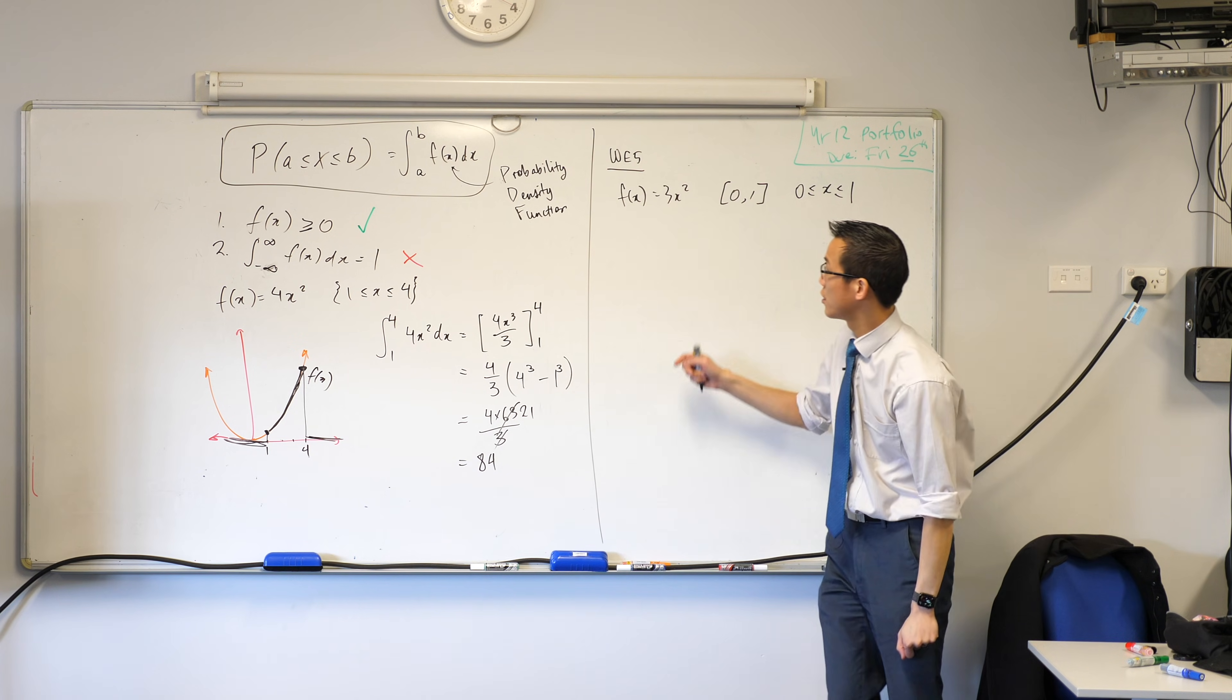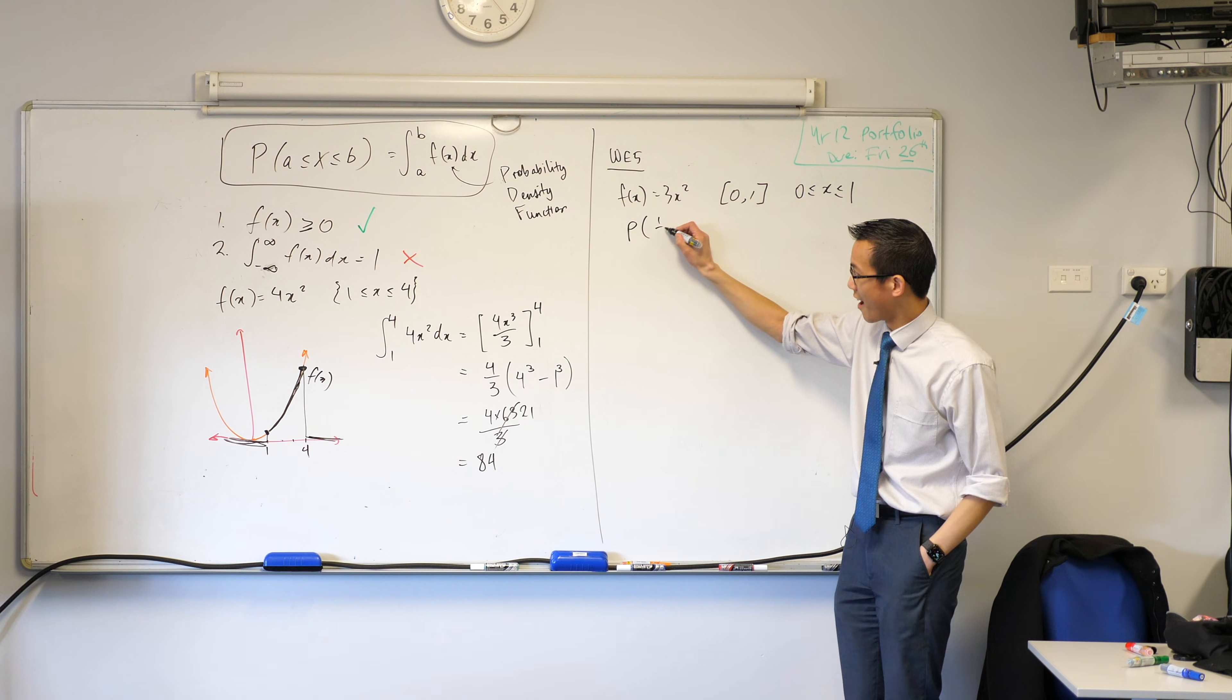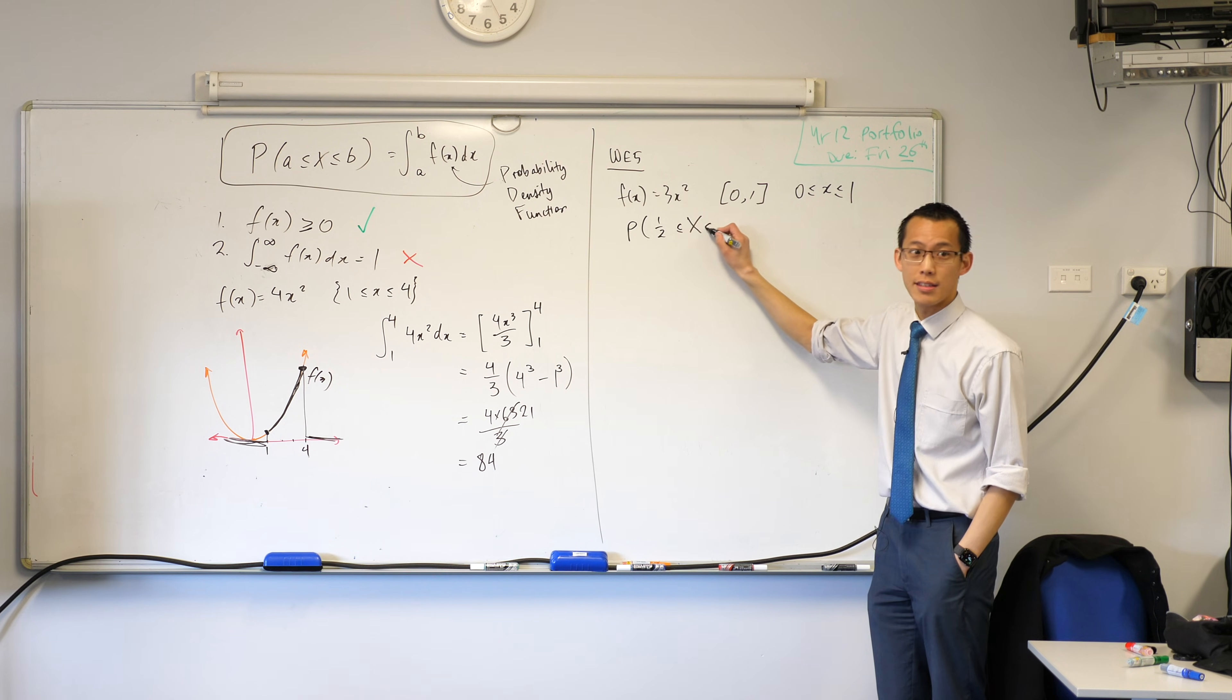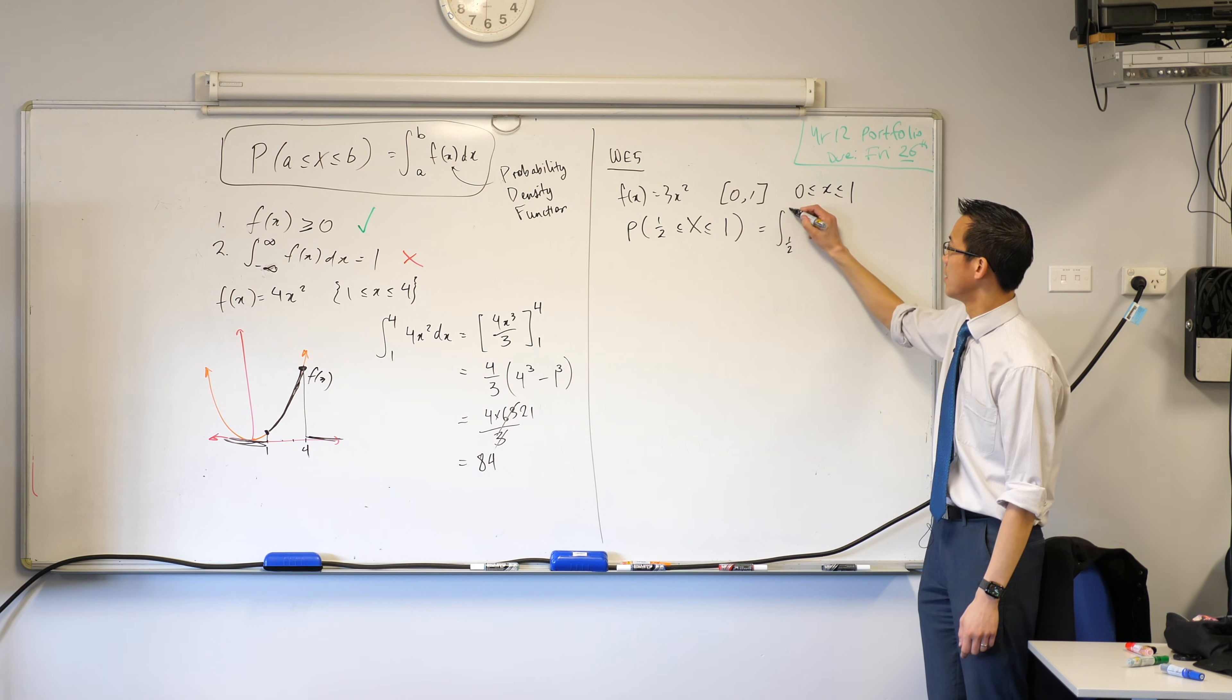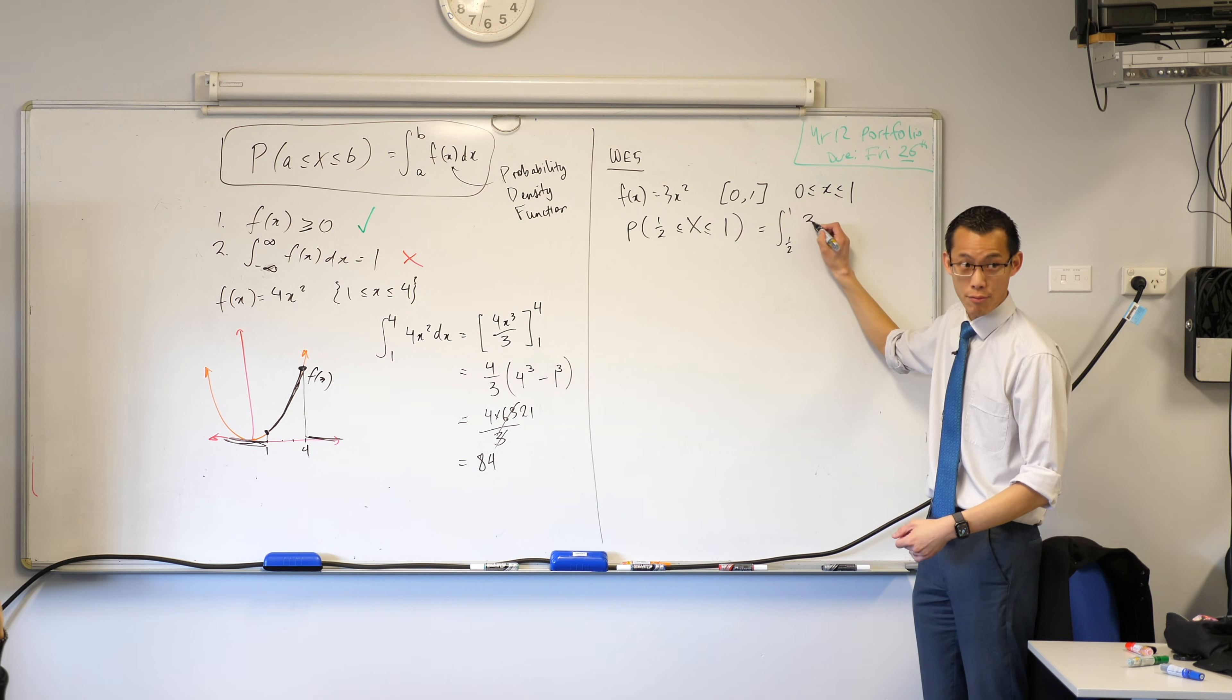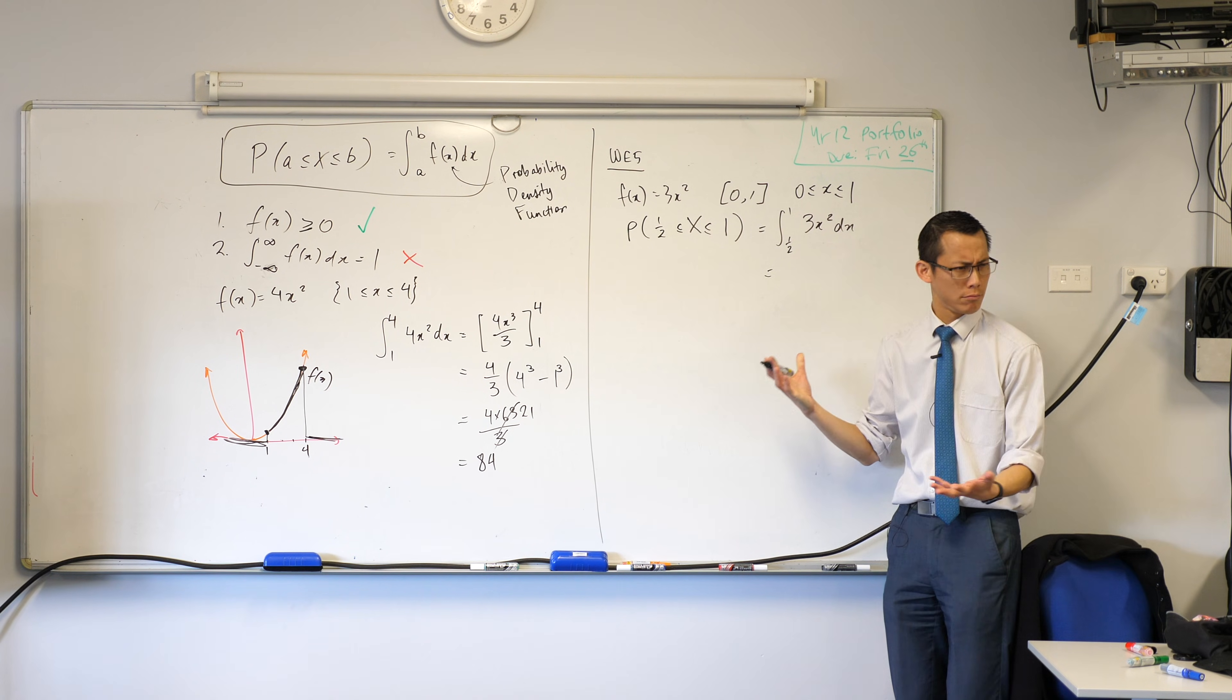So I'm just going to go straight from that definition and I'm going to say the probability of a half is less than or equal to x is less than or equal 1, equals, and then I write my integral from a half to 1 of 3x squared. That's what they gave us with respect to x. Happy?